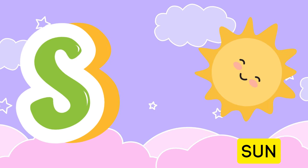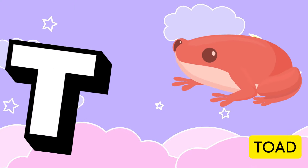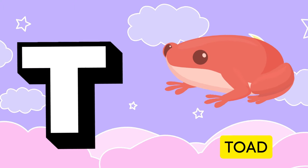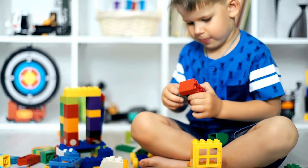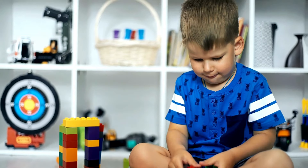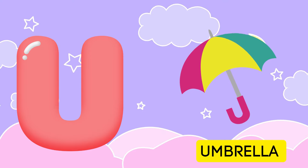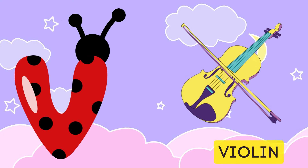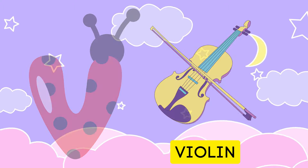S is for sun, s-s-sun. T is for toad, t-t-toad. U is for umbrella, u-u-umbrella. V is for violin, v-v-violin.